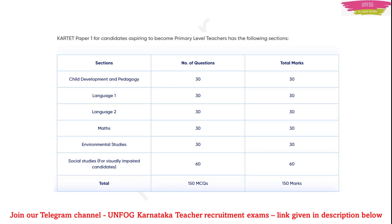Because Social Studies is the replacement of Maths and Environmental Studies, and it is the option given for only visually impaired candidates, Social Studies should have a total of 60 questions — 30 of Maths and 30 of Environmental Studies replaced. So here you will have 60 marks. Total number of questions will be 150 and total number of marks will be 150.